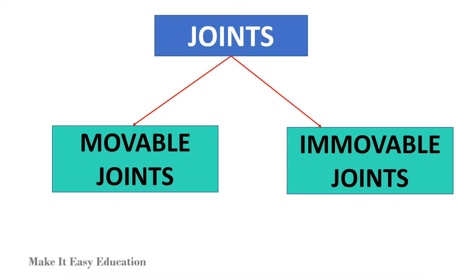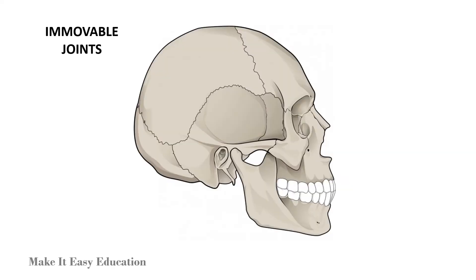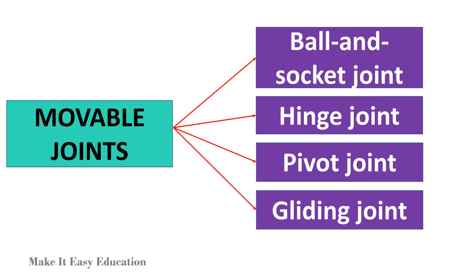Joints are of two types: moveable joints and immovable joints. The joints in the skull are immovable joints. Moveable joints are divided into ball and socket joint, hinge joint, pivot joint, and gliding joint.